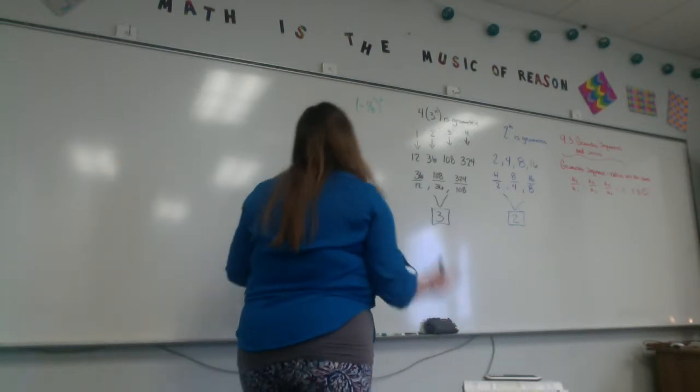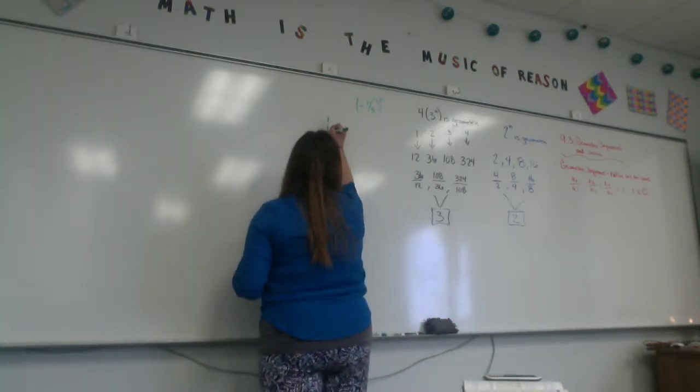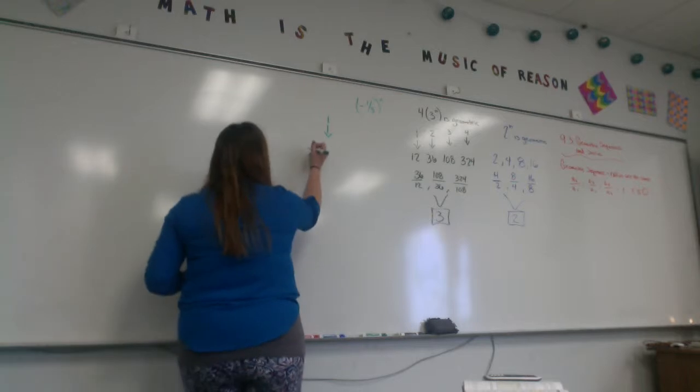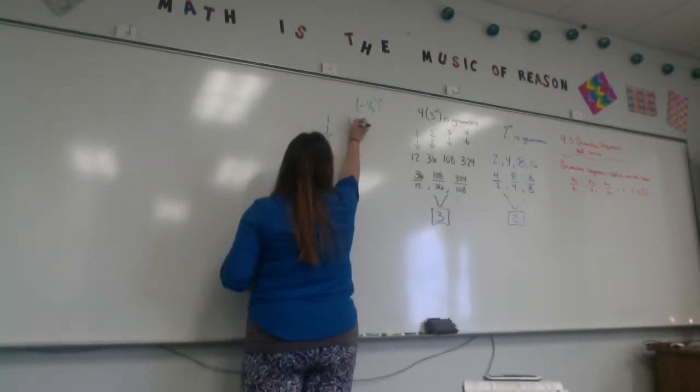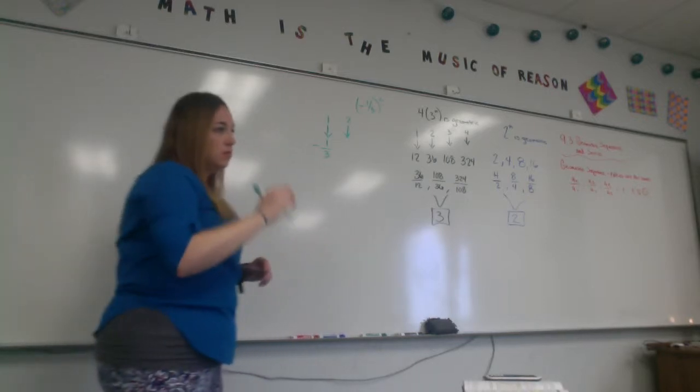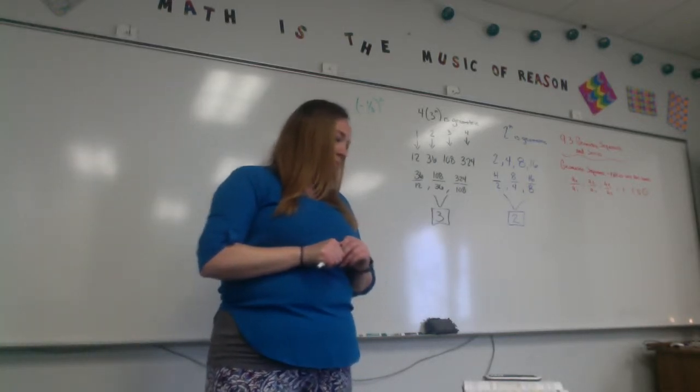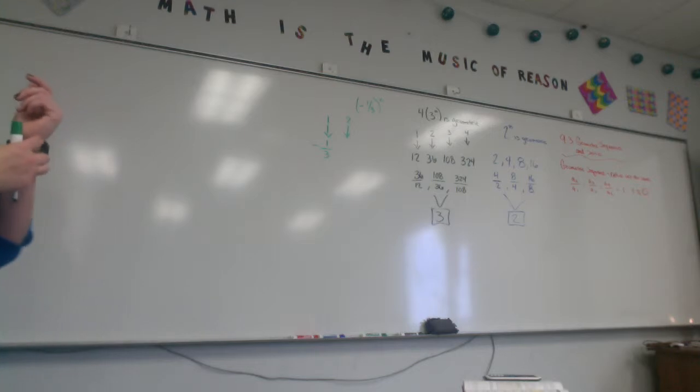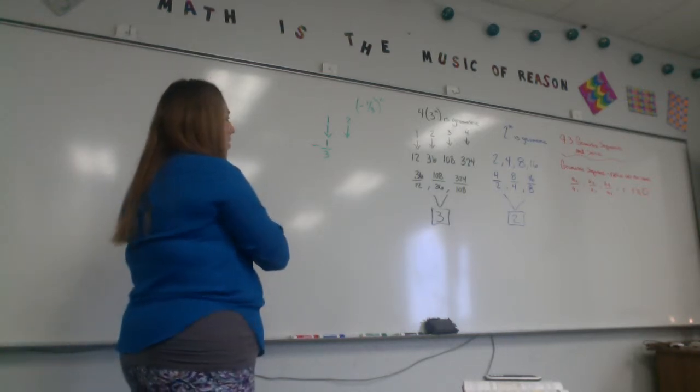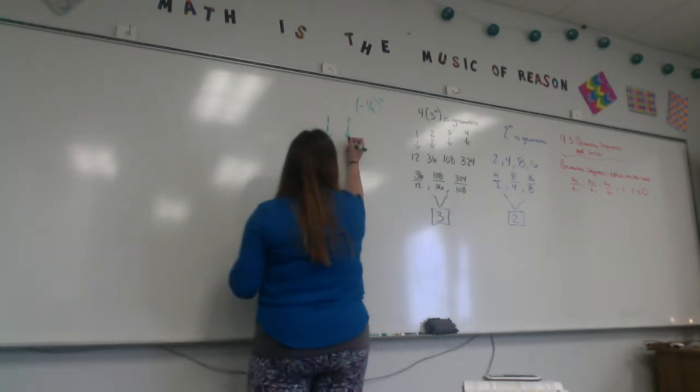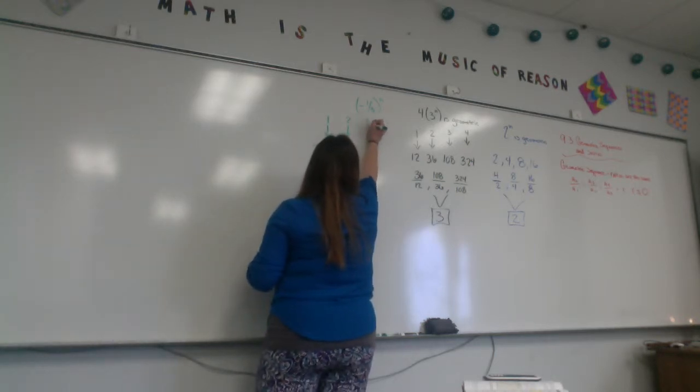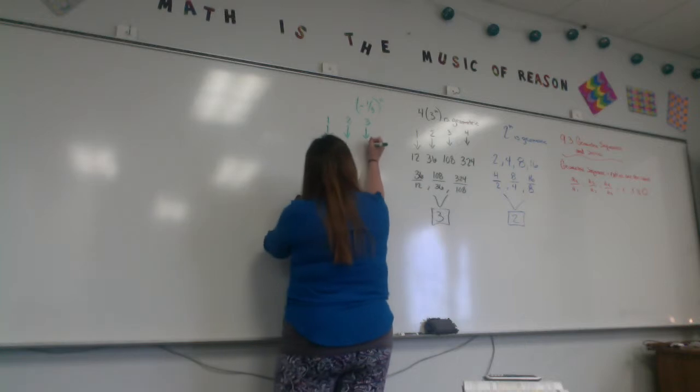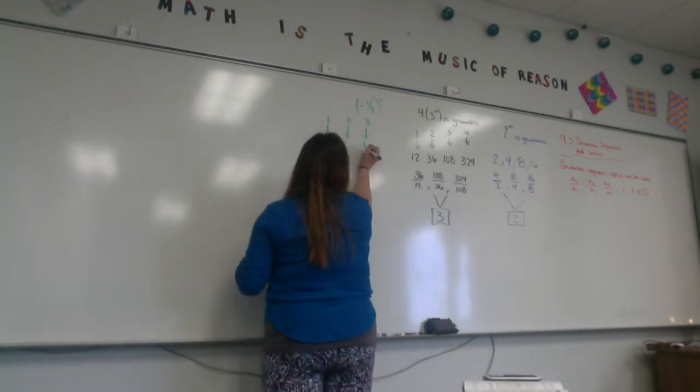We start with plugging in 1. What do you get when you plug 1 into negative 1 3rd to the nth power? Negative 1 3rd. What do you get when you plug in a 2? What is 1 squared? 1. And what is negative 3 squared? 9. So, you get 1 9th. What happens when you plug in a 3? 1 cubed is 1, and negative 3 cubed is negative 27.